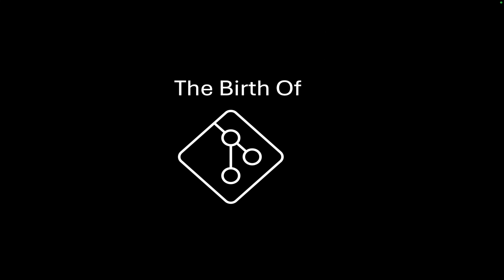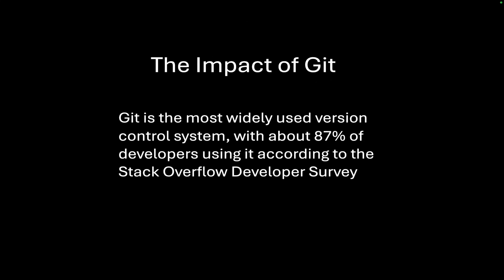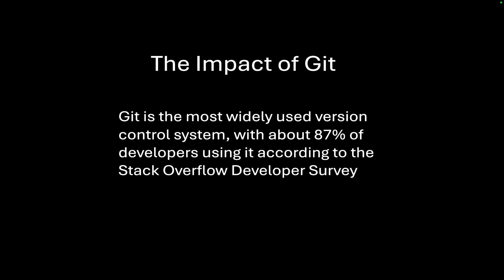Within days, Linus had the first version of Git. Initially, Git was a simple content-addressable file system focusing on speed and efficiency. It used a unique approach with its data structures and hashing to manage changes, and eventually it kept on growing into the Git that we know today.